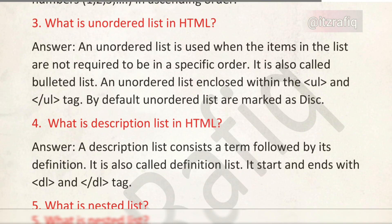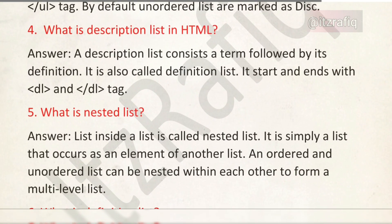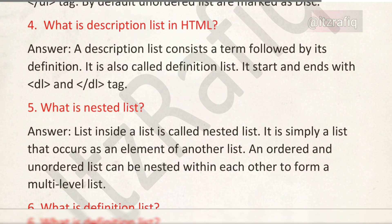Number three: what is an unordered list? It is similar to an ordered list, except the items are not in a specific order. By default, unordered list items are marked as discs. Number four: what is a description list in HTML? A description list contains a term followed by its definition. It is also called a definition list.